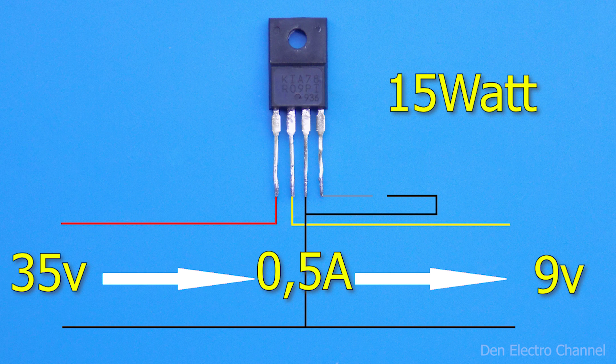In this case, the chip will dissipate only 13 watts. The efficiency of a linear converter will always be greater if the difference between the input and output voltage is small and the current is small.